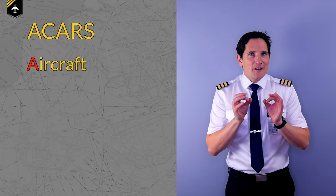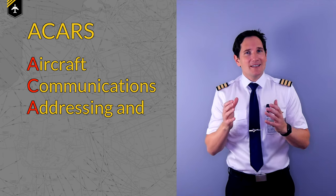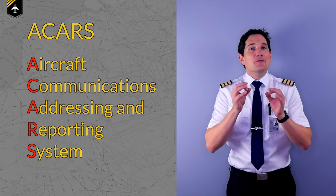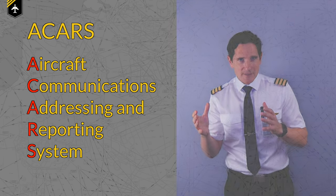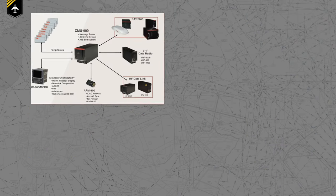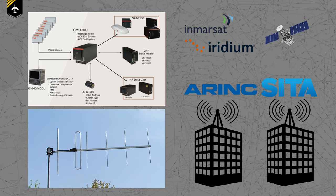So what does ACARS actually stand for? It's Aircraft Communications Addressing and Reporting System, and refers to the complete air and ground systems — consisting of the equipment on board, the equipment on the ground, and a service provider forwarding your message to the right receiver.